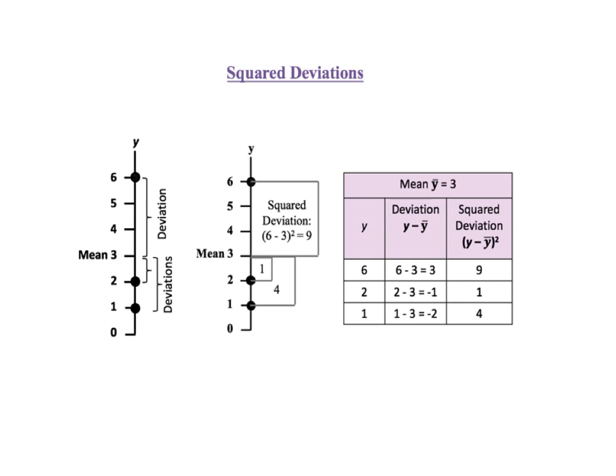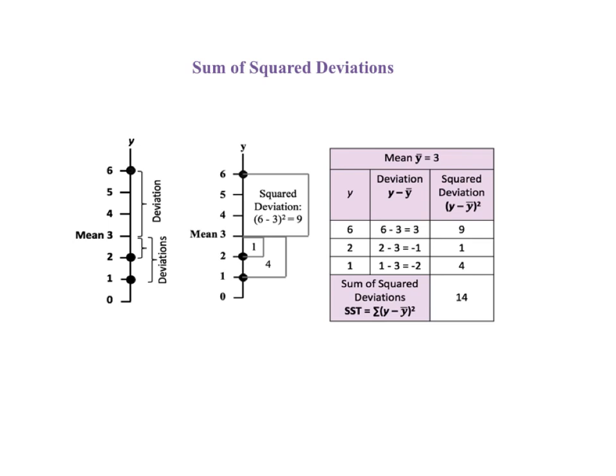But we can eliminate this effect by squaring the individual deviations. The squares of the three deviations are 9, 1, and 4. And the sum of the square deviations from the mean, as shown in the bottom row of the table, is 9 plus 1 plus 4 equals 14. This is the sum of squares total, SST. It is the total of all the variation of the three points from the mean.